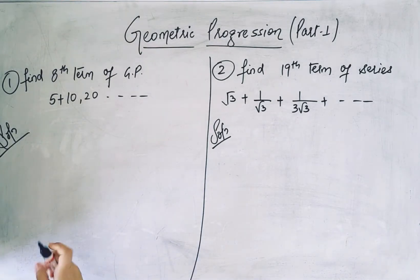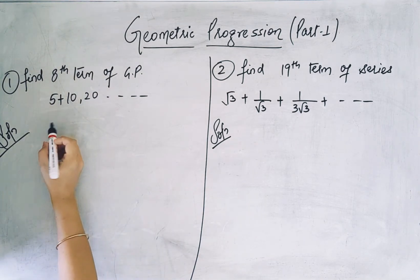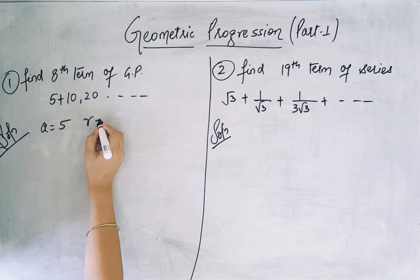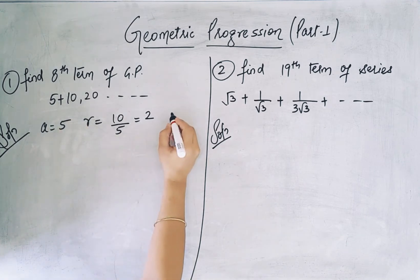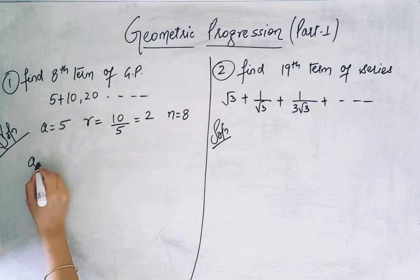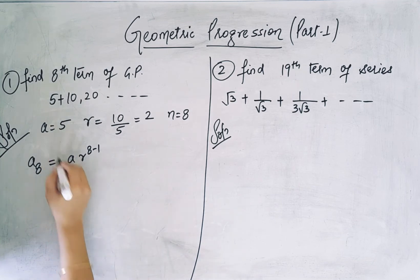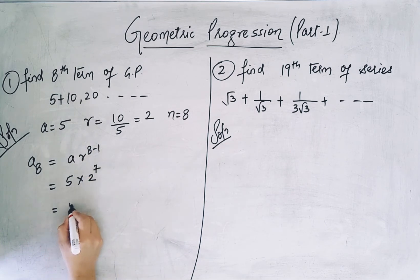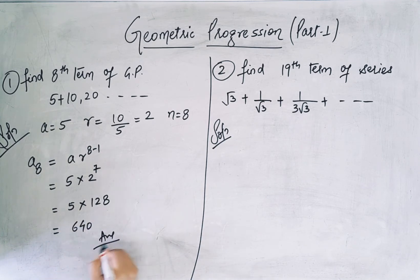Question: Find the 8th term of GP: 5, 10, 20. The first term a = 5, and the common ratio r = 10/5 = 2. We need to find the 8th term, so n = 8. Thus a₈ = 5 × 2^(8−1) = 5 × 2^7 = 5 × 128 = 640.